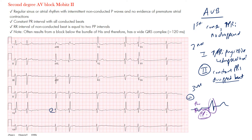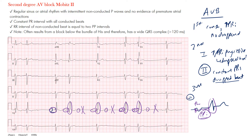The PR interval from beginning of P wave is constant — no prolongation — and then there's a conducted QRS complex. PR interval normal, conducted complex; PR interval normal, conducted complex; then a P wave with no conducted complex, and it goes back to normal. You see a P wave with no beat, and every time you do have a beat, you have a P wave with a normal PR interval — no prolongation as in type 1. The PR interval is constantly normal, with intermittent dropped beats.